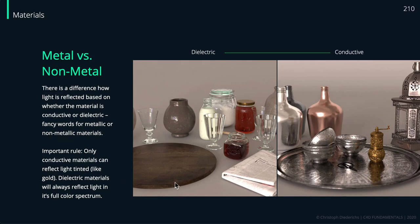As mentioned in the last session, I want to talk a little bit more about metal versus nonmetal materials. There's basically a difference in how light is reflected based on whether we have a material made out of metal or not. It's actually that simple — we basically just have those two kinds of materials in our world, and of course we can categorize all real-world materials this way.